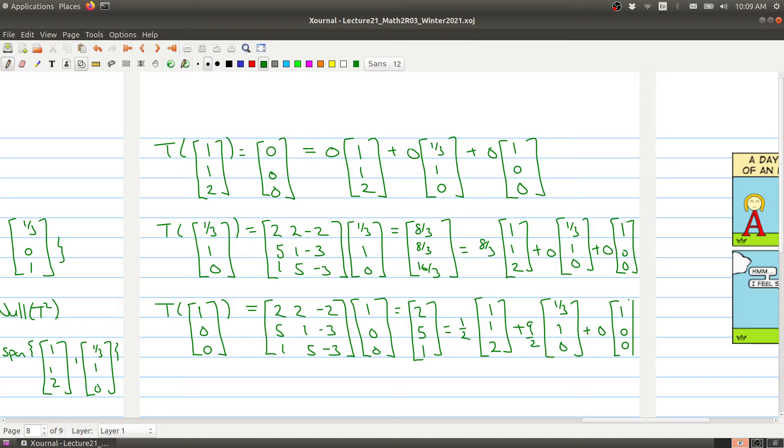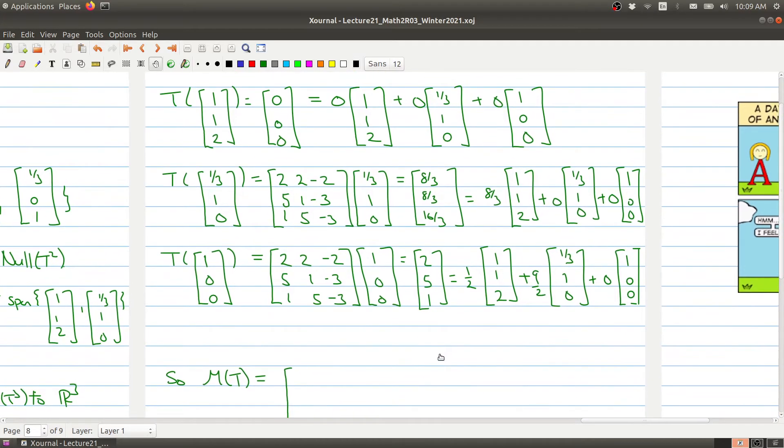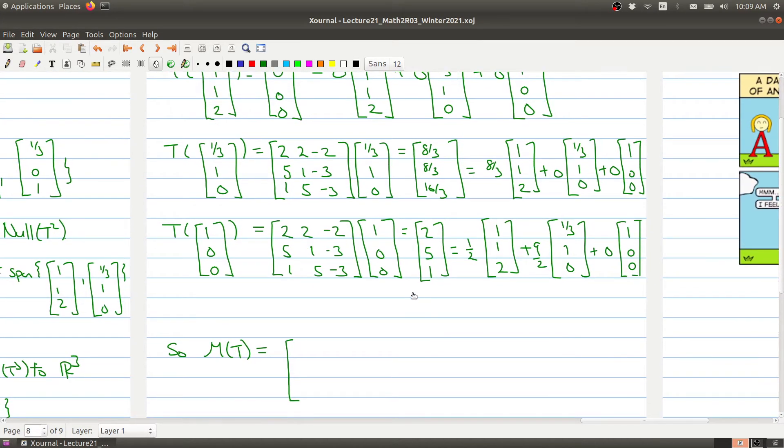Okay. So we can use this information to find the associated matrix. So remember how we do this. So here we have U1, U2, U3 being my columns.